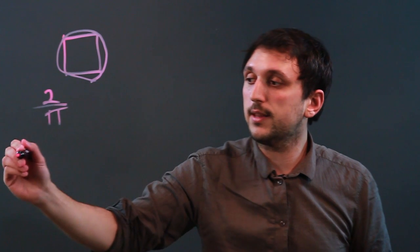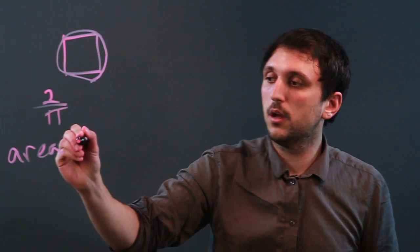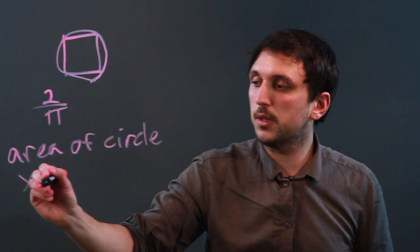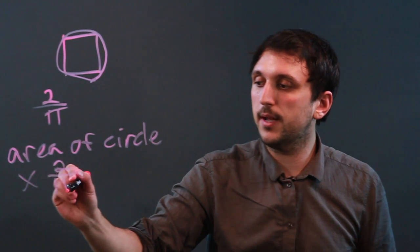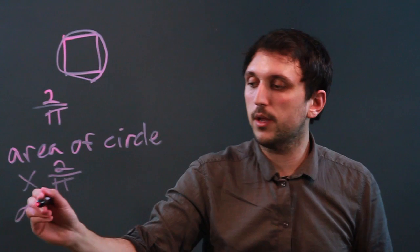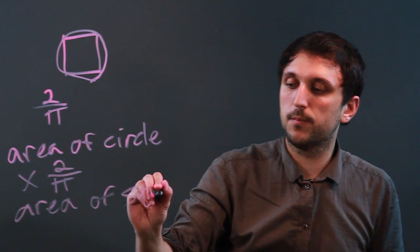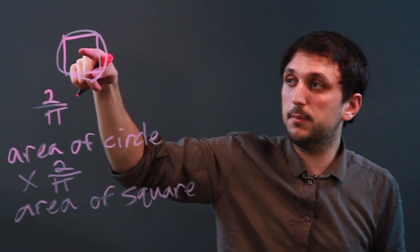Meaning, if you take the area of the circle, and you multiply it by 2 over pi, you get the area of the square, if the square is circumscribed.